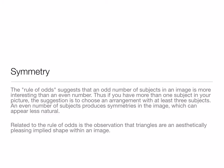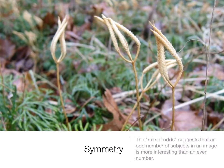Symmetry. I've talked about symmetry before — I'm a big fan; I like things to have a balance, and that's a big part of symmetry. The rule of odds suggests that an odd number of subjects in an image is more interesting than an even number. If you have more than one subject in your picture, the suggestion is to choose an arrangement with at least three subjects, since an even number of subjects produces symmetry in the image. Note the arrangement of our three focal points here.